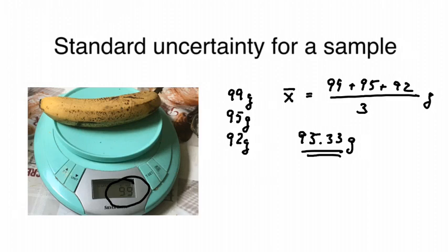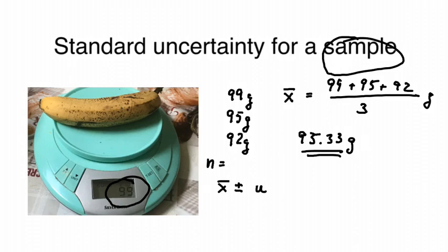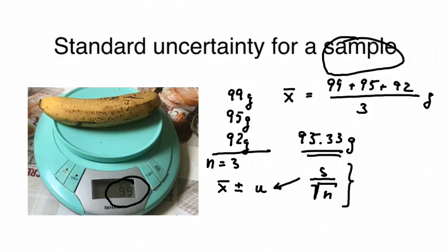Now, what is the uncertainty? We always need to give it as x-bar plus/minus an uncertainty, which I abbreviate as lowercase u. When using a sample with several measurements — in this case n equals 3 — the standard uncertainty for the sample is given by the standard deviation divided by the square root of n. This expression is also referred to as the standard error of the mean.